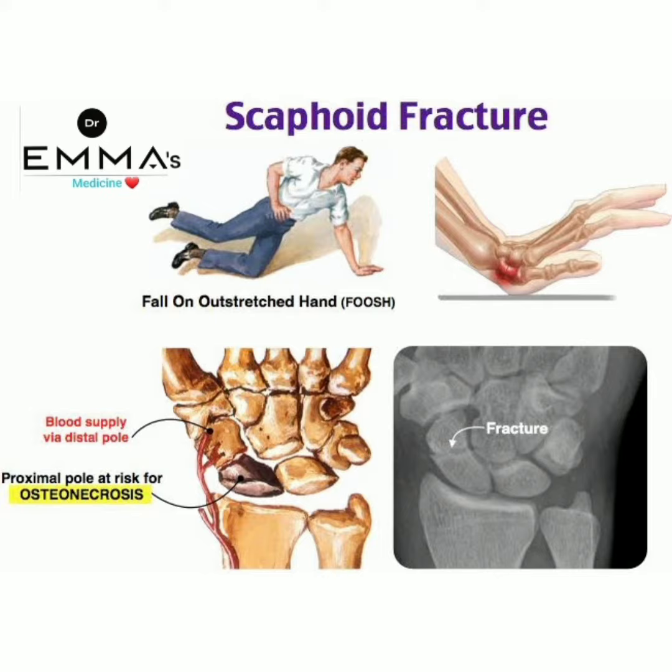Looking at the bone image, the blood supply runs via the distal pole, so the proximal pole is at risk for osteonecrosis. In the case of a scaphoid fracture, there is a risk for the proximal pole to develop osteonecrosis. On the X-ray image we can see the scaphoid bone fracture appearance.